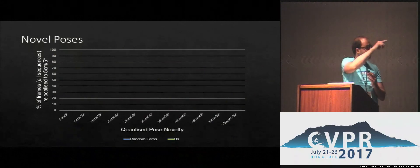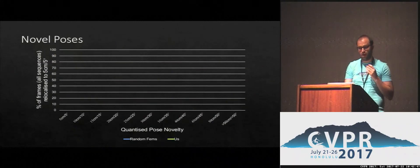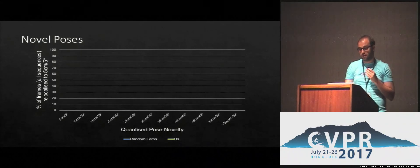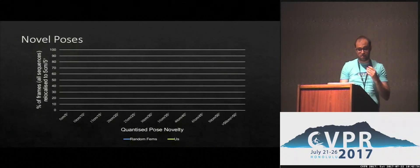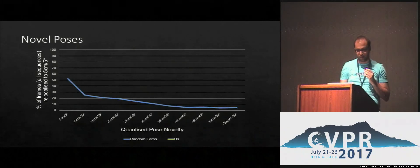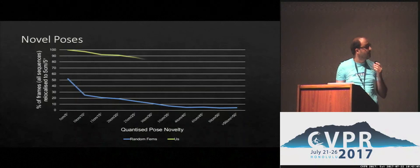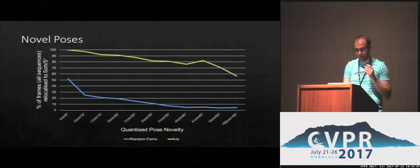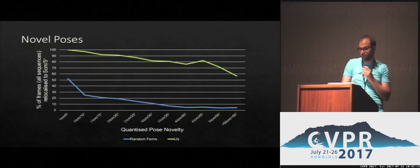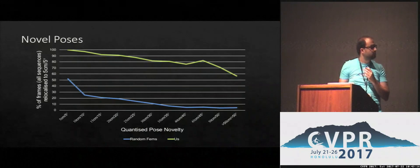Let's quantify this difference in robustness. On the horizontal axis we have pose novelty — the further right, the more novel the pose. On the vertical axis we have accuracy — the percentage of test frames relocalized correctly. A weakness of keyframe-based methods is that their performance falls off with pose novelty, as we see here. We indeed do better, as you can see. To recap: our evaluation takes more time, but we provide a much more accurate result, and the adaptation still runs in real time.